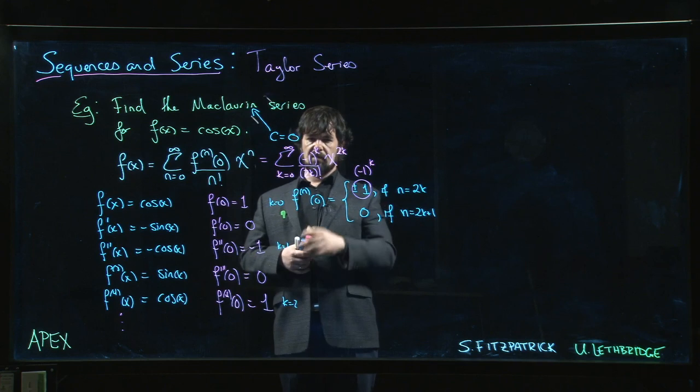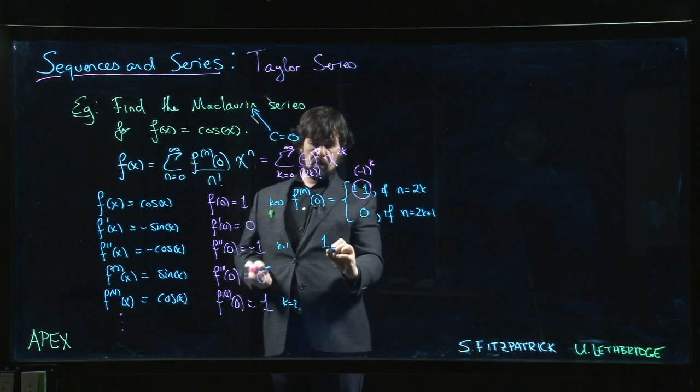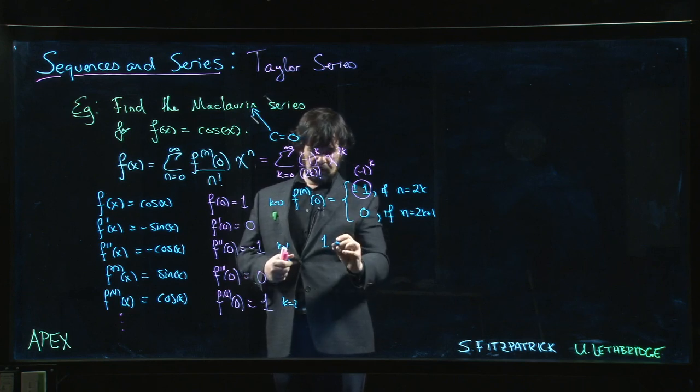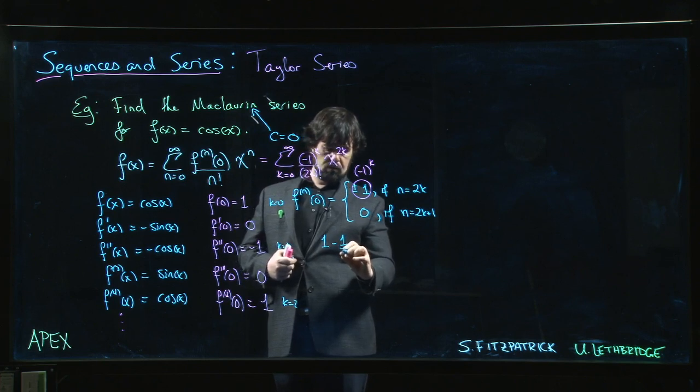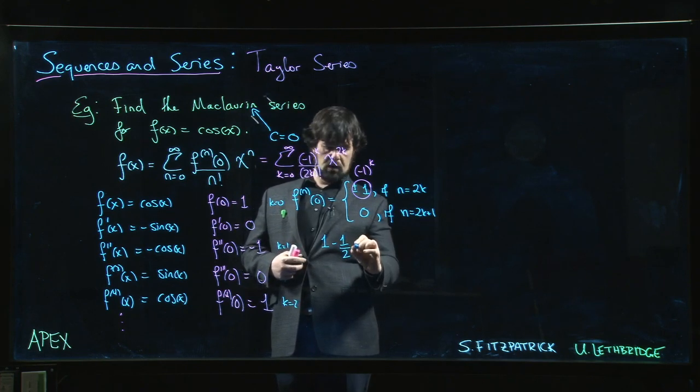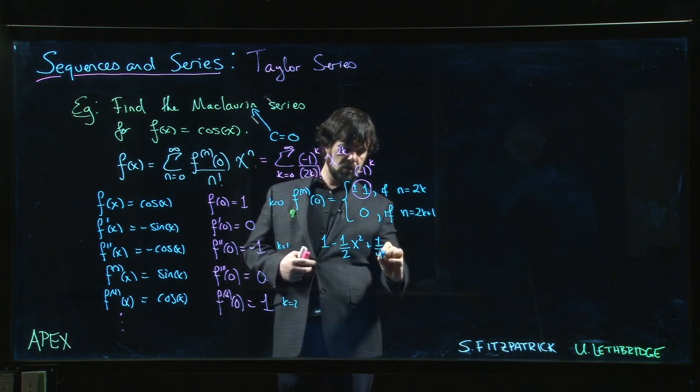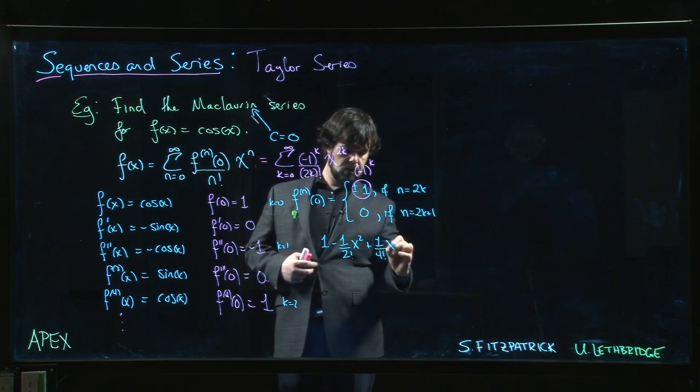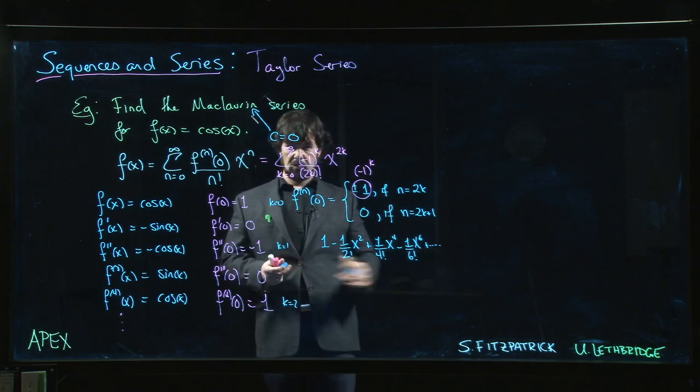So the power series in summation formula looks like that. If you wanted to start writing out the terms, we get ones that you probably saw for Taylor polynomials: 1 minus 1 over 2 times x squared plus 1 over 4 factorial x to the 4 minus 1 over 6 factorial x to the 6 and so on. But this time it goes on forever.